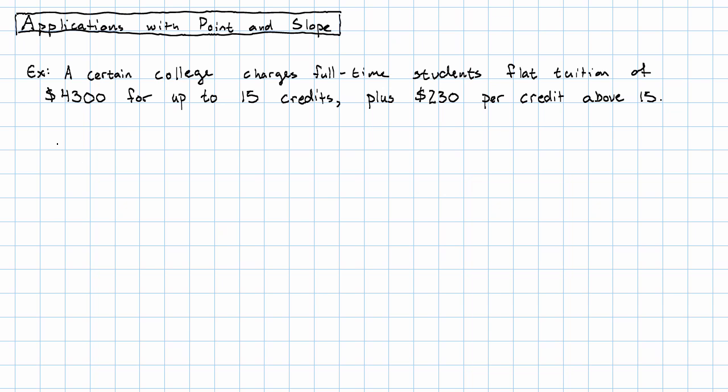Our variables then are c, the number of credits a student is taking, and t, the amount of tuition.